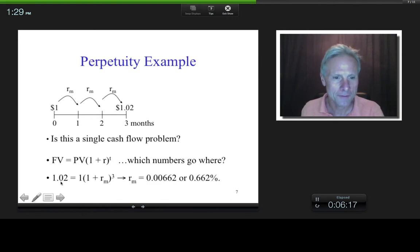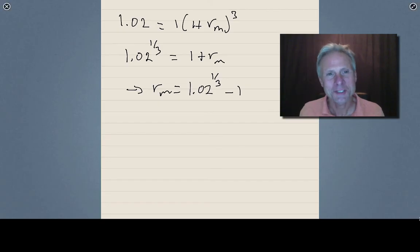So if we picture that, there are all the numbers. And if you solve for the effective monthly rate, which is algebra, you get about 0.67%.